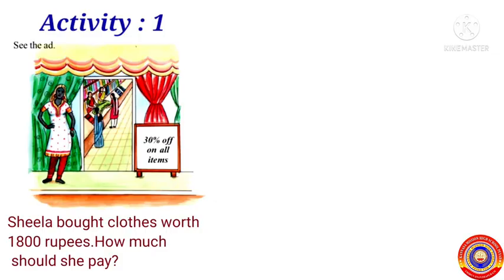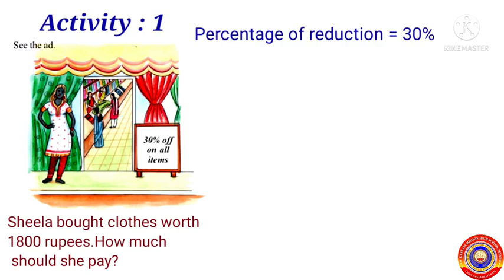Activity number one: see the ad shown in this picture — 30 percentage off on all items. 30 percentage off means if you purchase any item from the shop, you will get a reduction of 30 rupees for every 100 rupees. Sheila bought clothes worth 1800 rupees. How much should she pay? It is given that the percentage of reduction is 30 percentage. Now we have to find out the reduction in price.